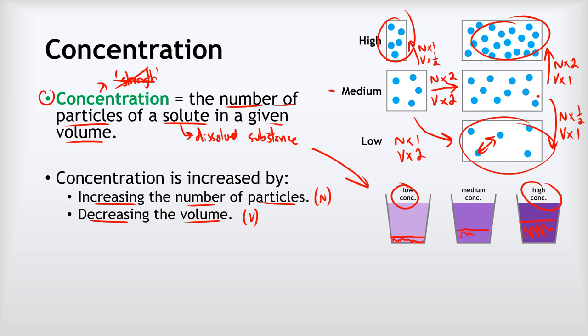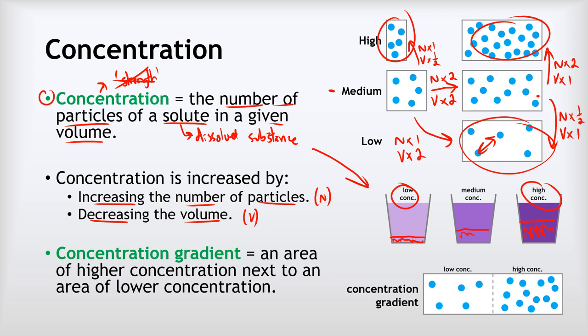The last thing to think about here is the idea of the concentration gradient. A concentration gradient is simply when you've got an area of higher concentration right next to an area of lower concentration. We've got higher concentration on the left and lower concentration on the right, so we call that a concentration gradient. That's going to be really important as we talk through more stuff to do with osmosis, diffusion and active transport.